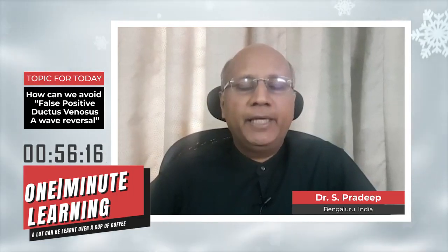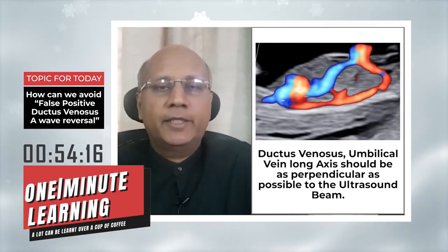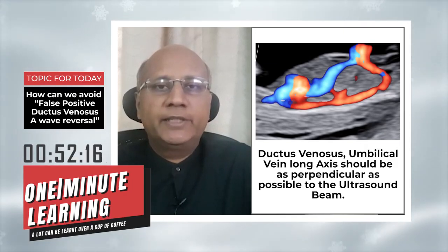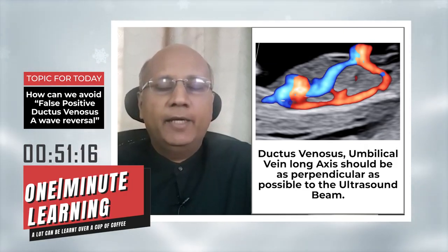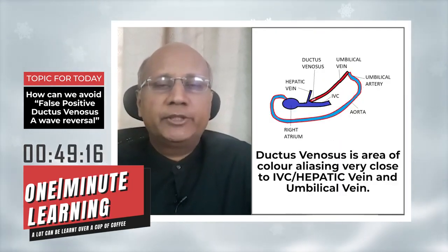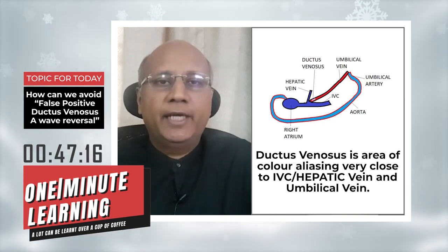We can do that by understanding the bright peak sign. The ductus venosus is too close to the IVC, and when the sample box collects information from both the ductus venosus and IVC,